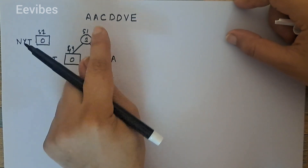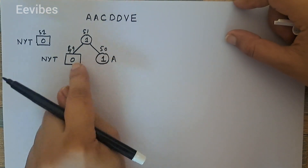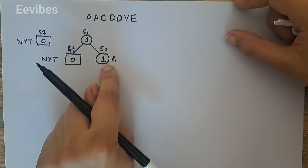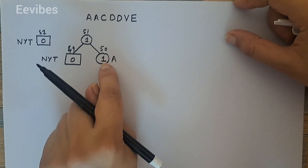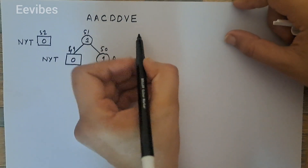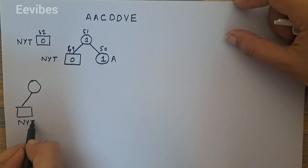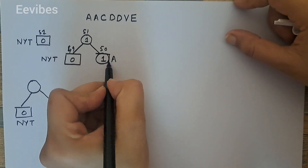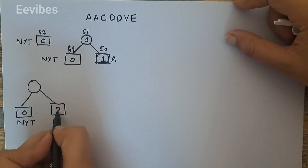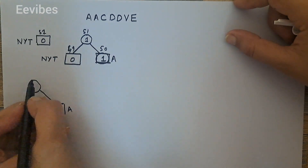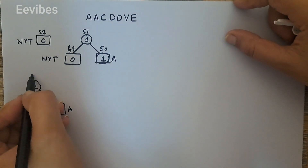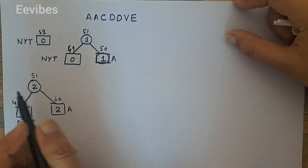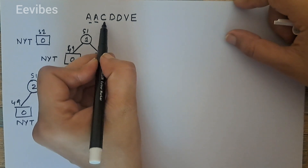In the next stage, we read the next symbol which is 'a' again. Since it is already present in the tree, we don't need to introduce a new node — we just increase the frequency of 'a'. The NYT node's weight remains zero while 'a' becomes 2, so zero plus two becomes two. The node numbers are 51, 50, and 49.